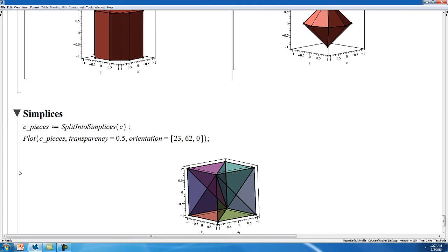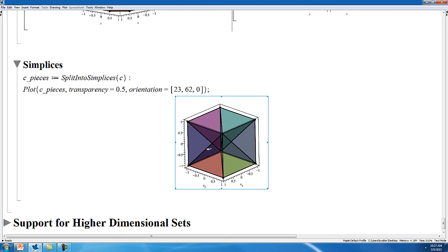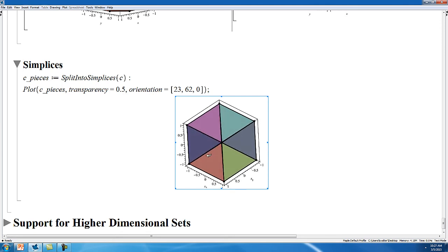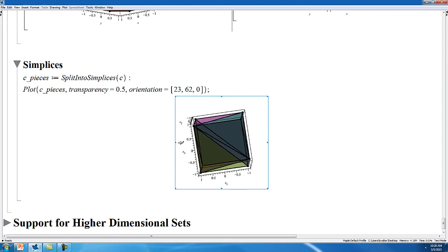You can split a set into simplices, and this can be useful, for example, if you have a collision detection algorithm that can't work with arbitrary geometries, but that can work with tetrahedrons, for example. So in this case, the cube is split into six different pieces, six different tetrahedrons.